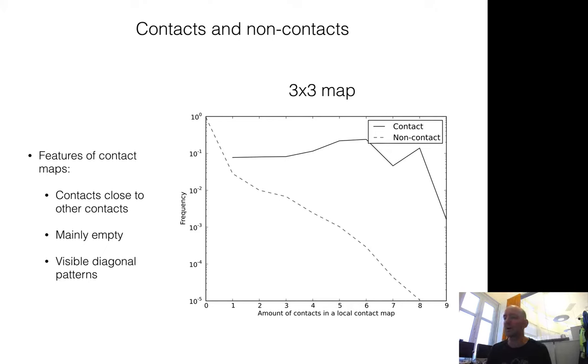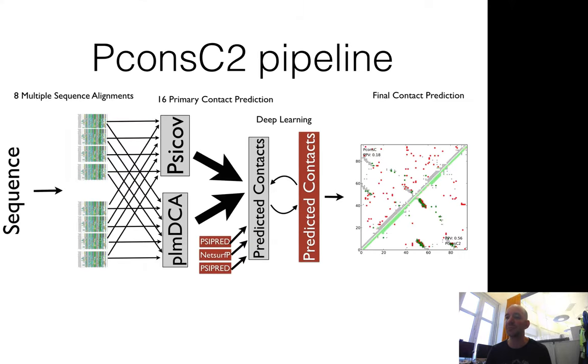However, if you have a contact in the middle, still about 10% have no other contacts, but another 10% have one contact, another 10% have two contacts, and so on. Basically it's quite flat until you fill it out and have nine contacts.